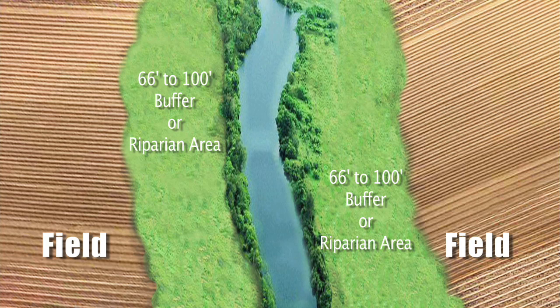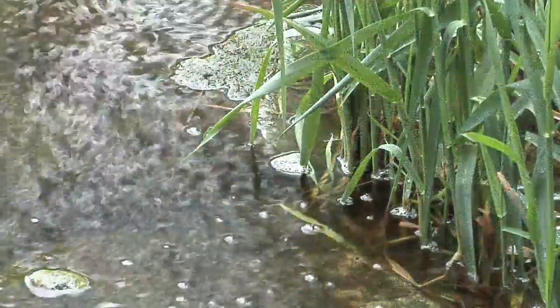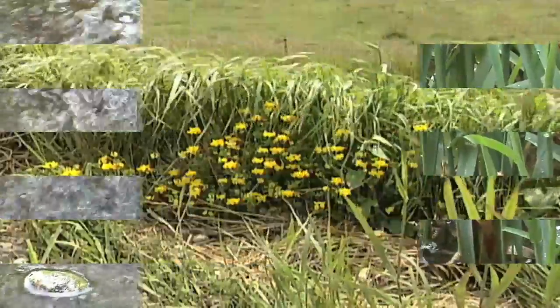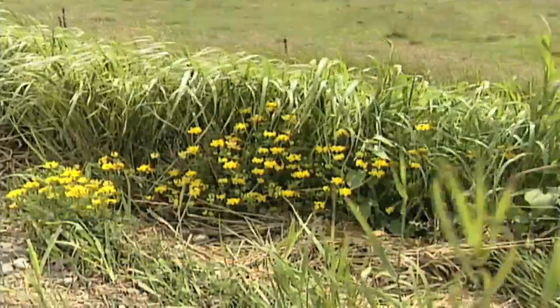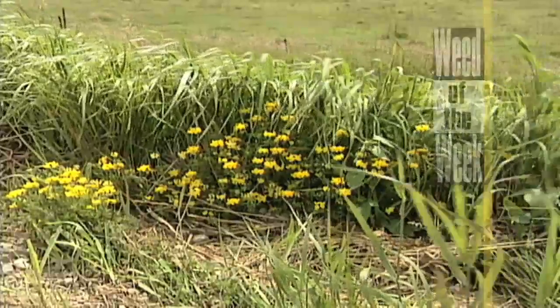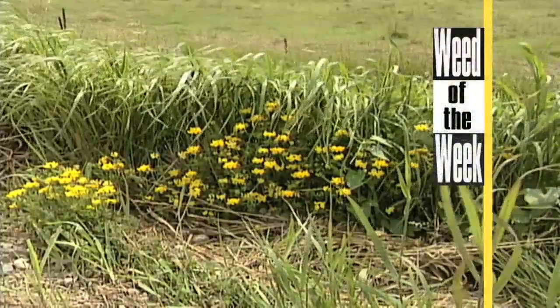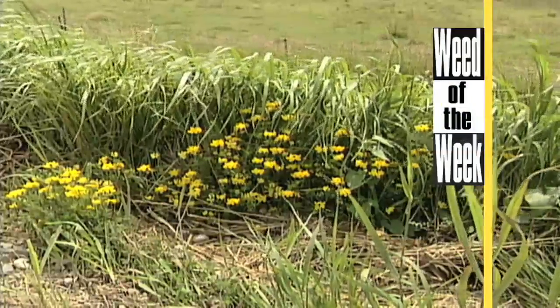A lot of times these areas are at least 66 feet wide, but they might be 100 feet or more — it all depends. All we can say is if you're looking at one of these areas, make sure you're talking to your NRCS people or local conservation people and set up something that's good for your area. Also do a little bit of planning for weed control — we'll show you how to kill a tough weed later in the show.